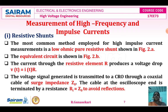The first method is the resistive shunt. The most common method employed for high impulse current measurement is a low ohmic resistive shunt, shown in figure 2A. The equivalent circuit is shown in figure 2B. The current through the resistive element R produces a voltage drop: V(t) = I(t) × R. This is the general principle, the same V = IR logic applied in the time domain.